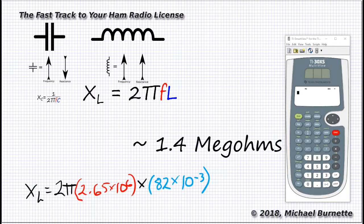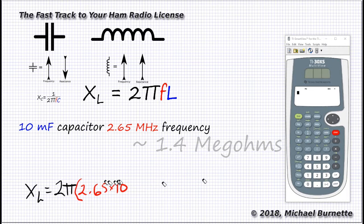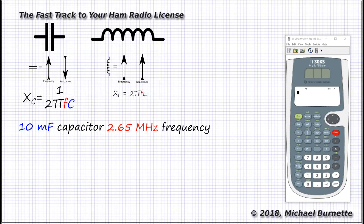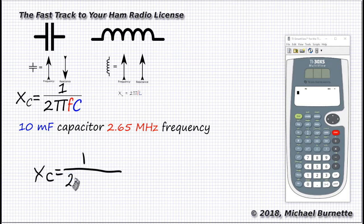Let's figure the reactance for a 10 millifarad capacitor at 2.65 megahertz. The formula is XC, this is capacitive reactance, equals 1 over 2πfC. Let's plug in the values. 1 over 2π times 2.65 times 10 to the sixth. That's the hertz. Close the parent. 10 times 10 to the negative third. That's the farads. Okay, looks good. Let's plug it into the calculator.